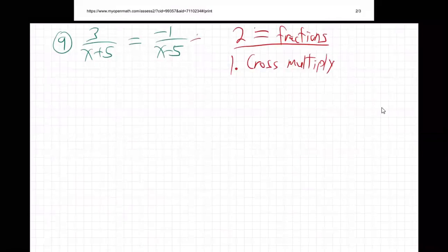Now, if there was something else here, if I had a plus four or something, then I'd have to do the whole LCD thing. It'd be a lot harder. But if you just have two fractions only, and they are equal, you can cross multiply.